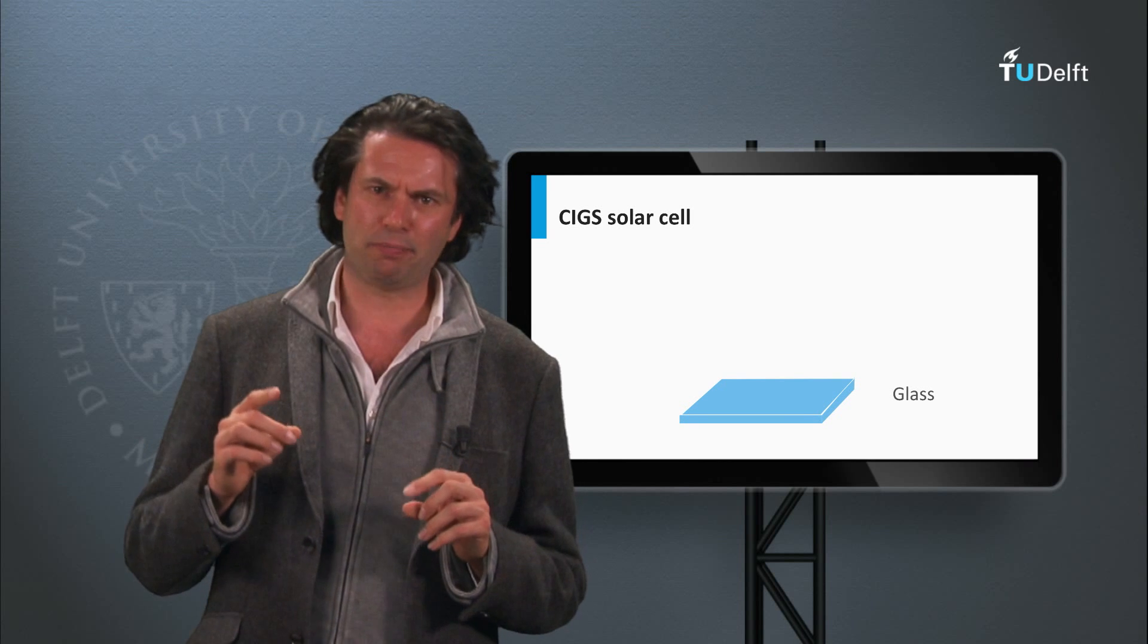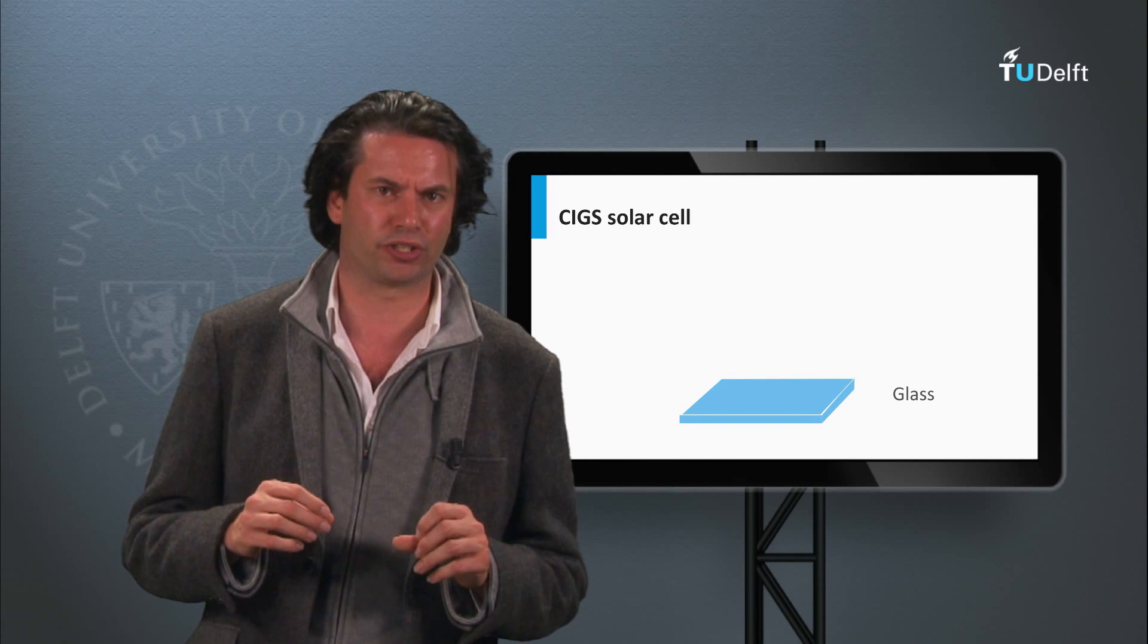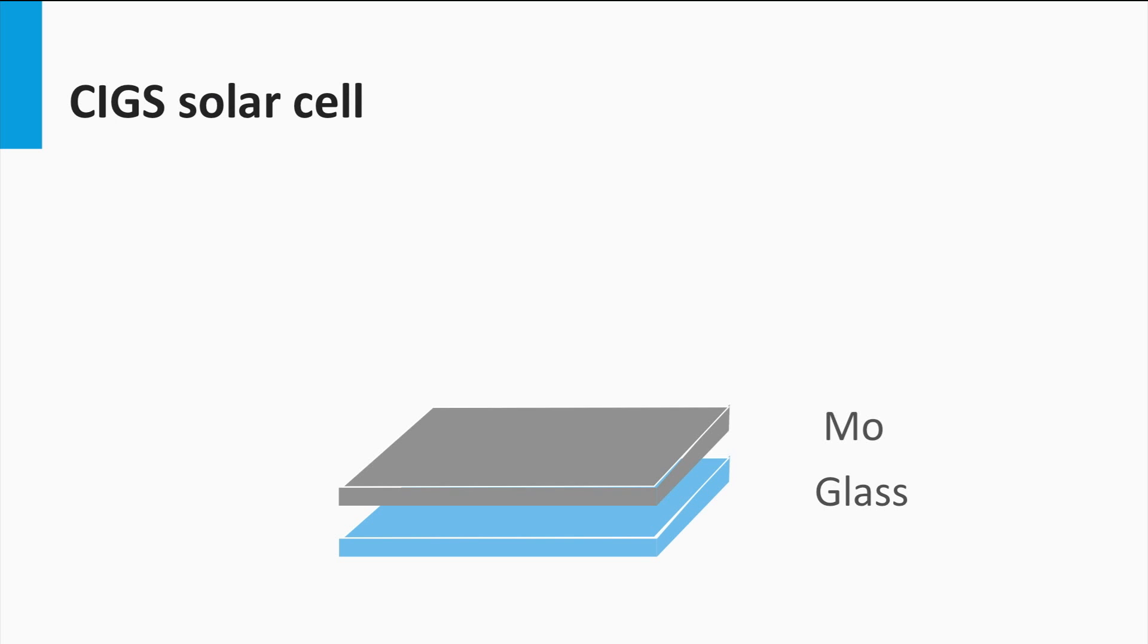Let's look at a typical CIGS solar cell structure. The substrate is glass. On top of the glass, a molybdenum layer with typical thickness of 1 micron is deposited, which acts as the back contact.